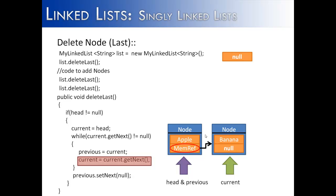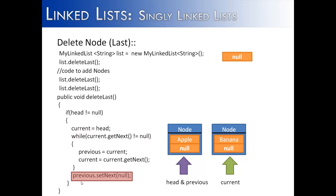We check the condition again: current.getNext — banana is the current node, and getNext is null. So the condition is false and we exit the loop. We then call previous.setNext(null), so the next pointer is no longer a memory reference to the banana node — it is null, and the nodes are disconnected. Head is now the only node in the list, which is apple, and the banana node has been effectively removed. When an object is no longer referenced in Java, garbage collection comes and deletes it from memory.